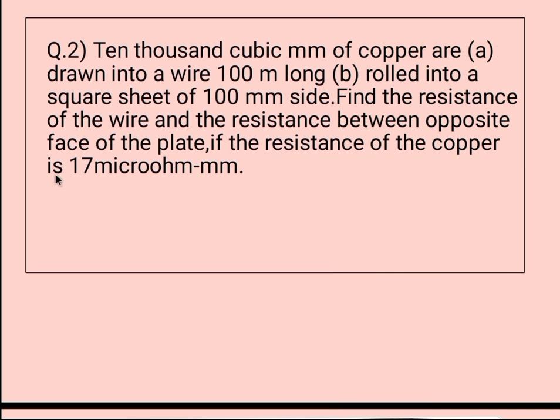Moving to the second question: 10,000 cubic mm of copper are first drawn into a wire 100 mm long, then rolled into a square sheet of 100 mm side. Find the resistance of the wire and the resistance between opposite faces of the blade if the resistivity of copper is 17 micro ohm mm.